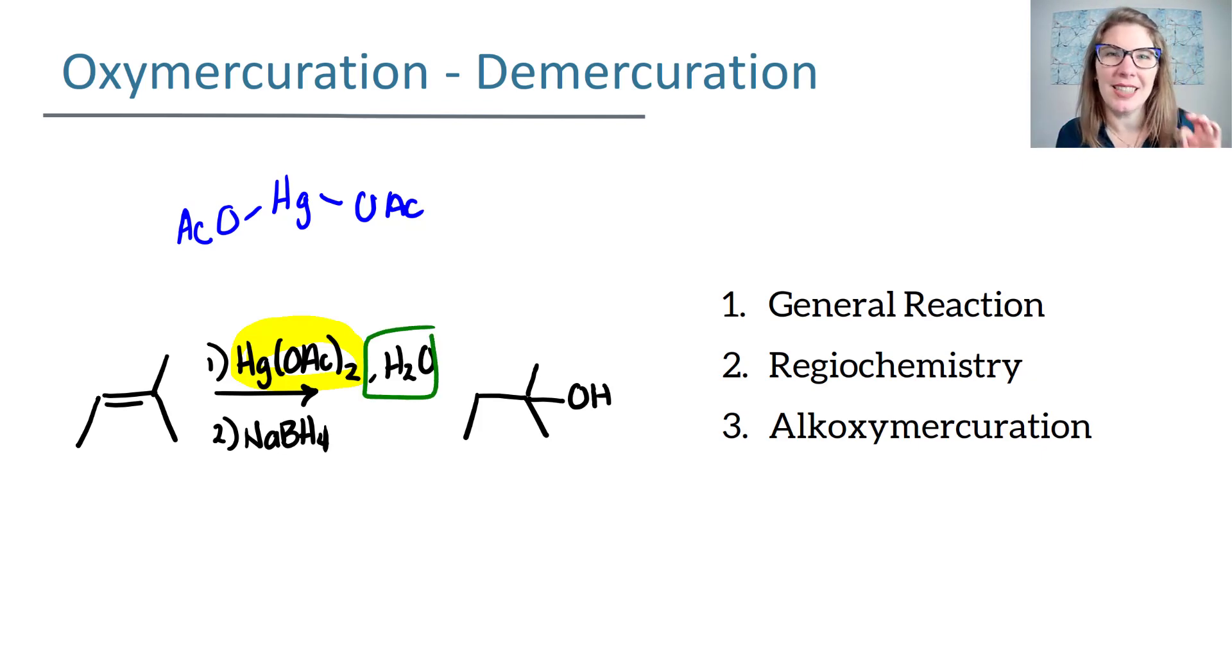And then in a separate second step is sodium borohydride, which is going to actually do the job of putting the OH in a particular location. In general, what happens is you are adding an OH and an H across the pi bond. The mechanism will illustrate why this is a Markovnikov addition. And then we can look at something called alkoxymercuration.